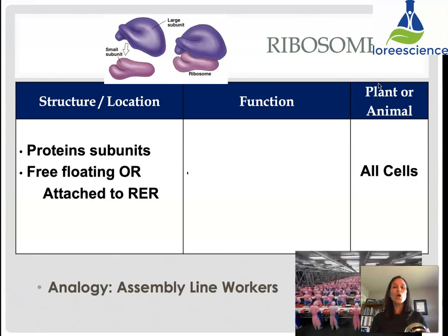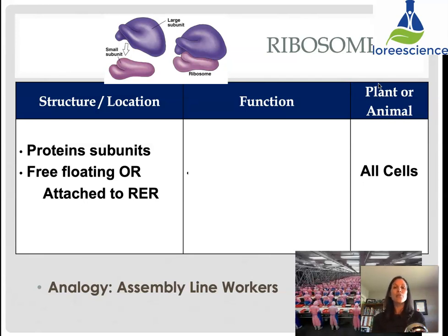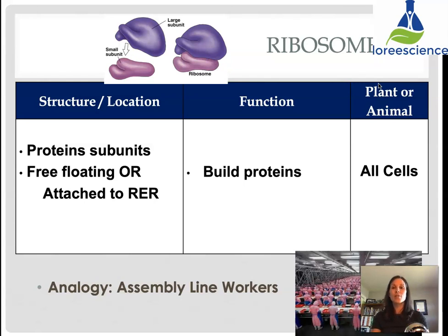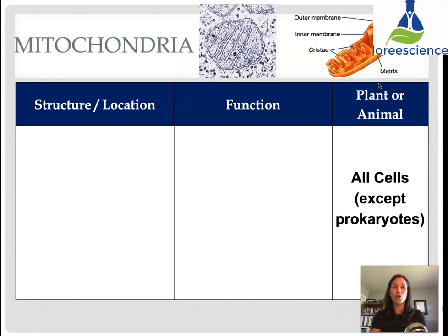Ribosomes are two distinct protein subunits that come together to act as one functioning unit. They can be found free-floating in the cytoplasm or attached to the rough ER. Their function is to build proteins — so yes, they are made of proteins, but their job is to make more proteins. All cells have ribosomes. In terms of analogy, they are like the assembly line workers: they are actually doing the work.